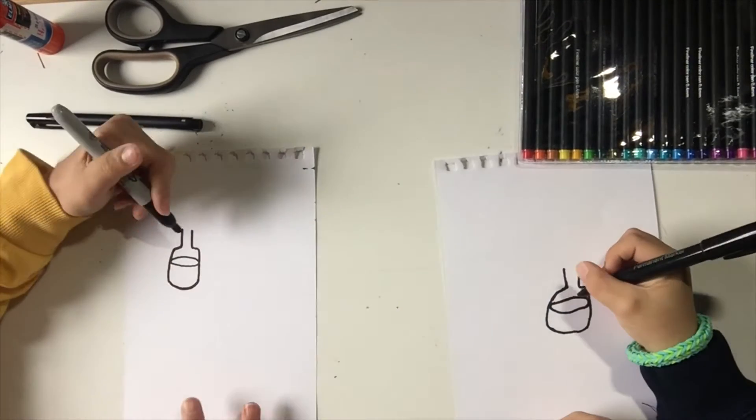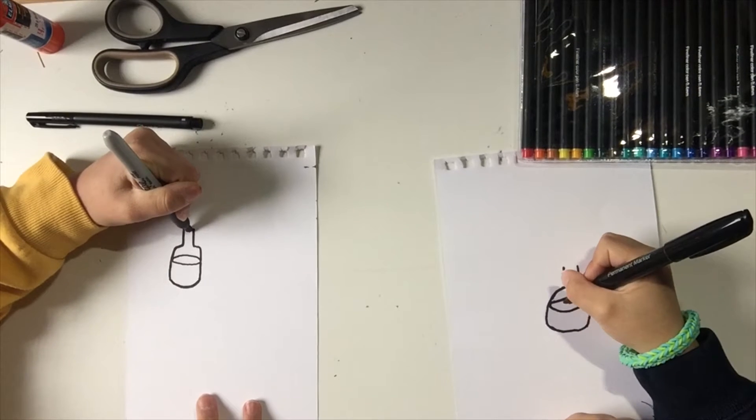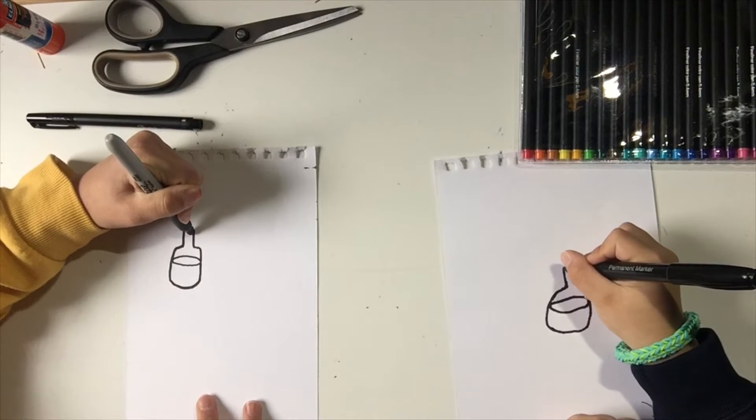And then we're going to draw the top of the lid, so it's going to be another smushed circle and then a line.